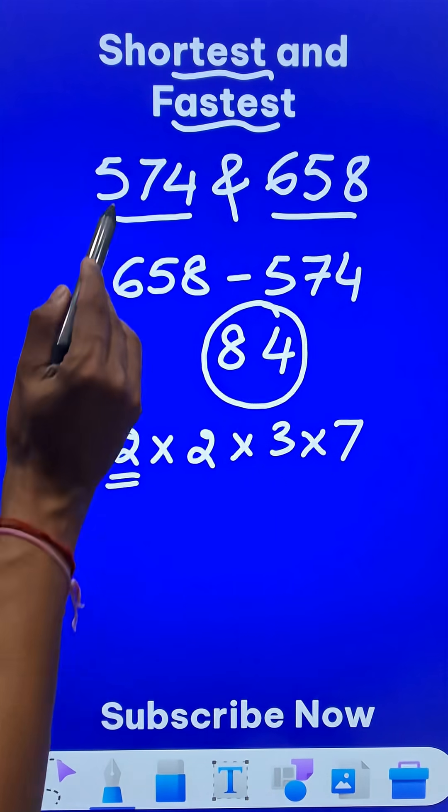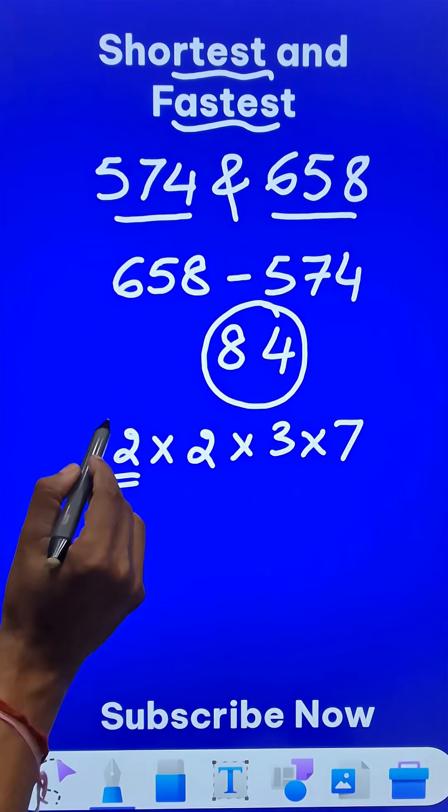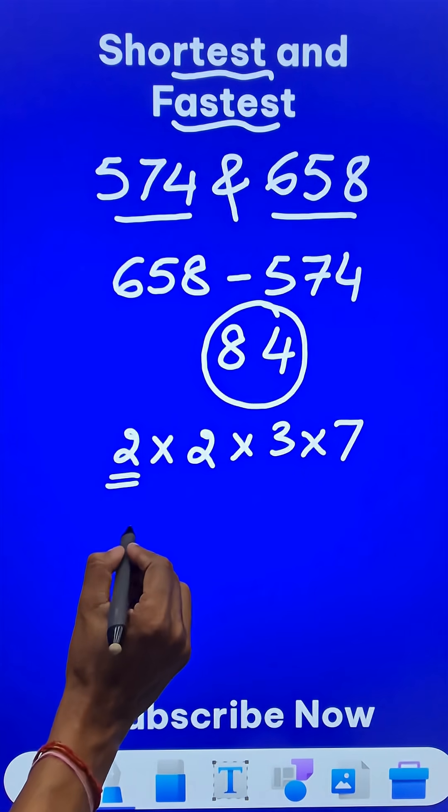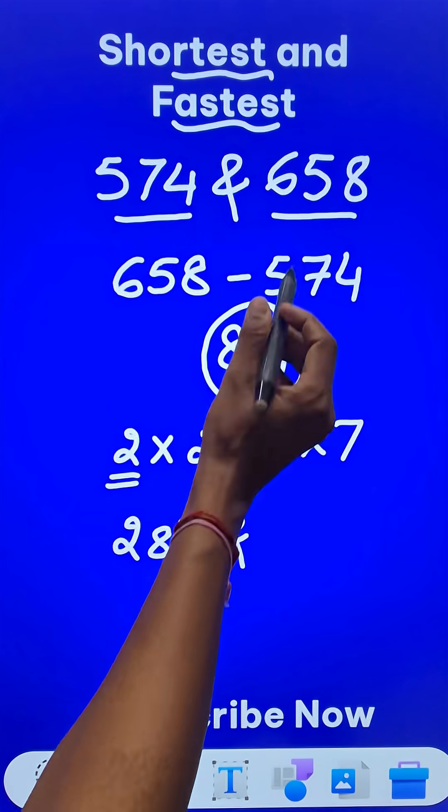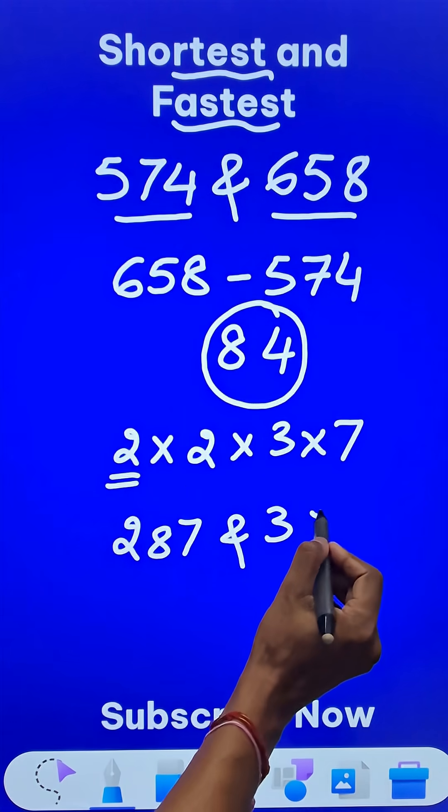Now if you see this 2, it divides both of them because these are even numbers. So when you divide 574 by 2, you get 287 and what about the next number? You get 329.